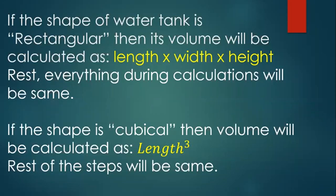But if the shape of water tank is cubical, then the volume will be calculated as length raised to power 3. So this volume when multiplied with unit weight of water, we will get total weight of water in that specific tank. Again, the rest of the steps will be same.